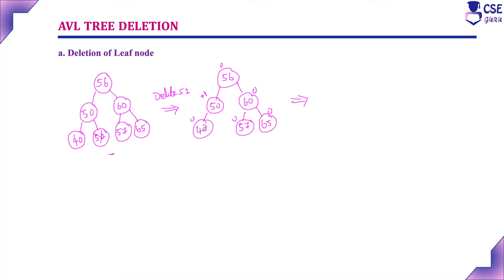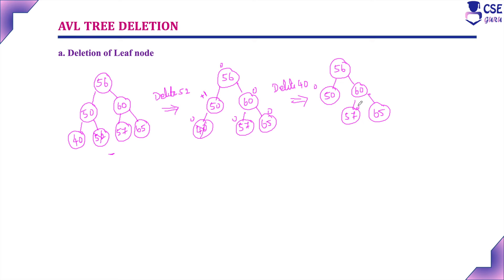Now suppose we delete node 40. After deleting node 40 and checking the balance factor, all nodes are 0 or -1, so the tree is still balanced.